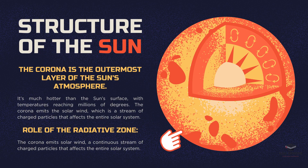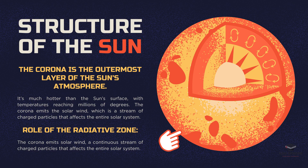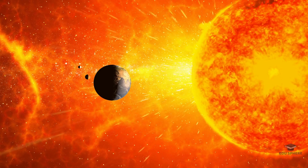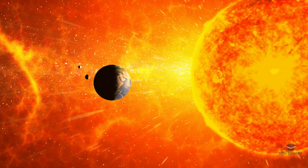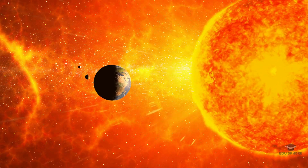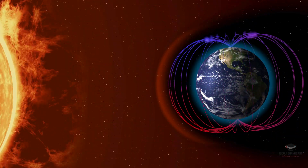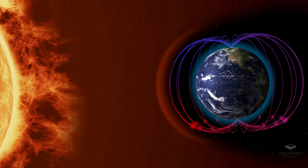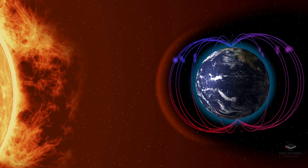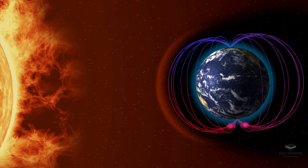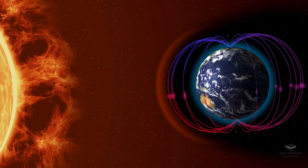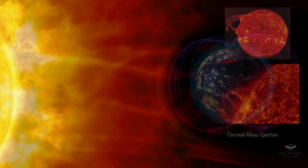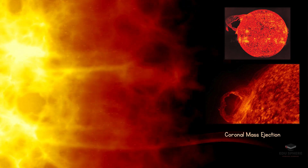The outermost layer of the Sun's atmosphere is the corona. The corona is incredibly hot, reaching millions of degrees. It is the source of the solar wind, which is a continuous outflow of charged particles that flows throughout the entire solar system. This solar wind interacts with the magnetic fields of planets, including our own Earth.